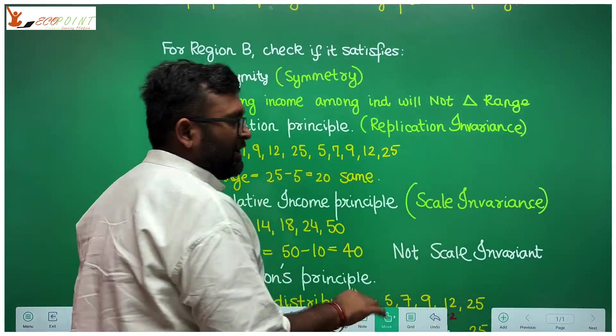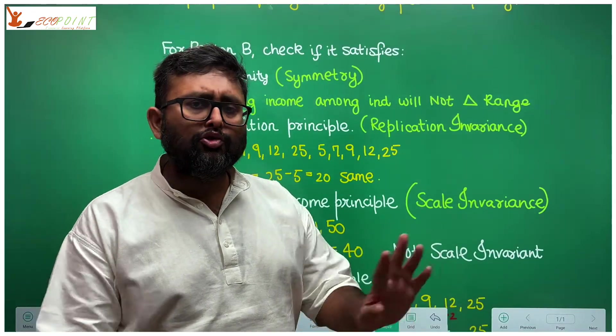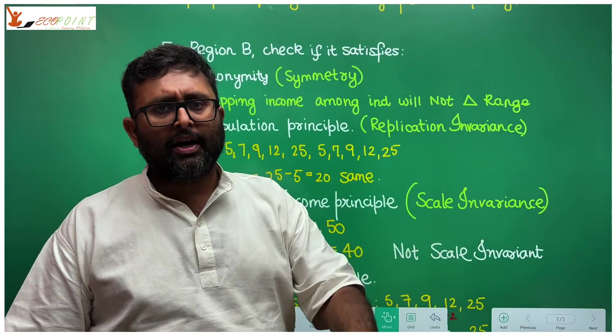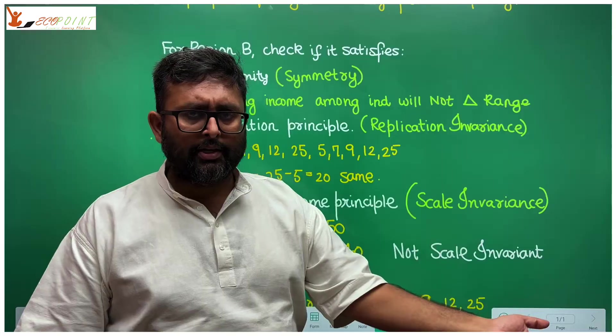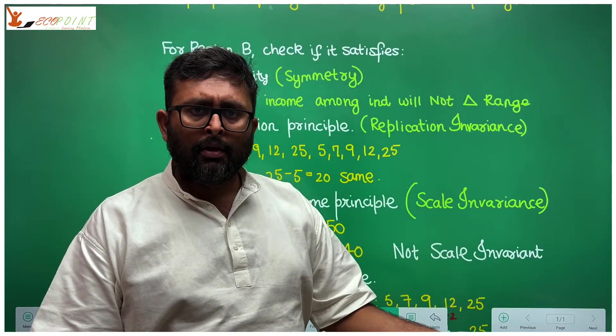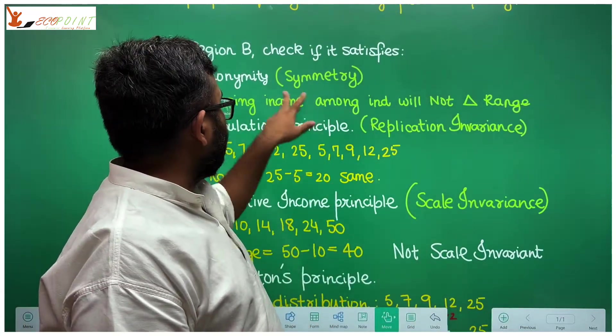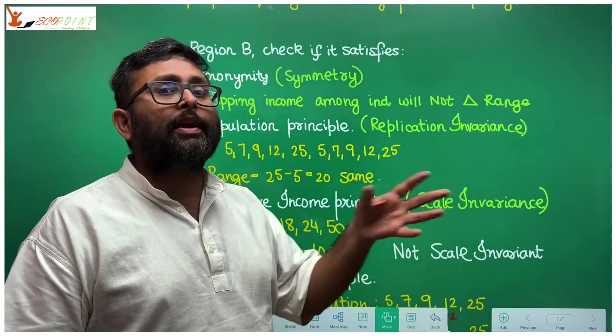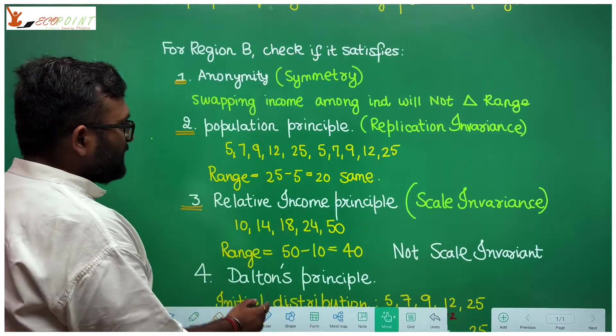You look at anonymity principle. You have 5, 7, 9, 12, 25. This is the income distribution. Now you swap the incomes. Let it be first individual earning 12, other individual earning 5, third individual earning 9, fourth individual earning 7, and fifth individual earning 25. Range is still same, maximum minus minimum. So does it satisfy anonymity principle? Yes. Because in anonymity principle, you're not concerned with who is earning what.